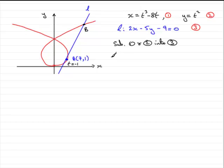So if we do that, what we're going to therefore have is 2 times x, which will be t cubed minus 8t. So we've got t cubed minus 8t. And then we've got minus 5y, so that'd be minus 5 times y, so that'd be t squared. Minus the 9 equals 0.